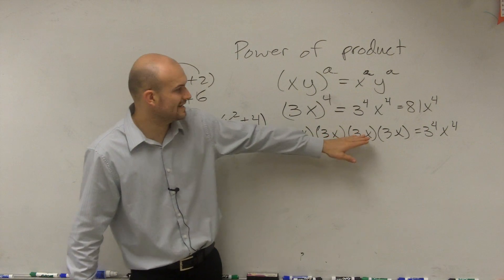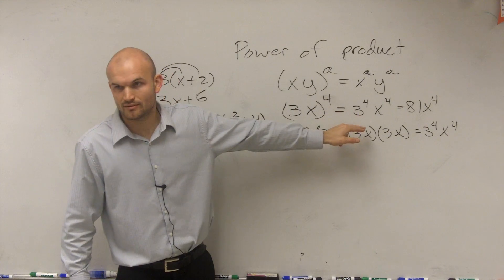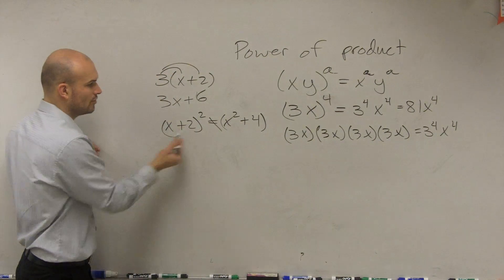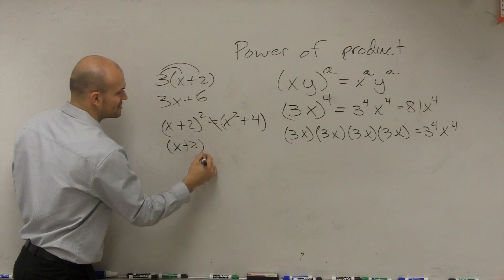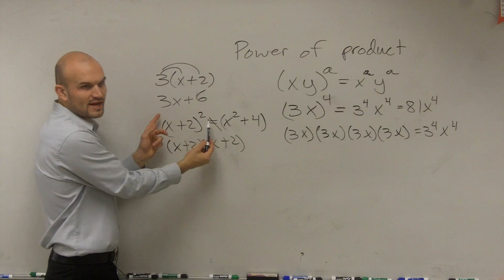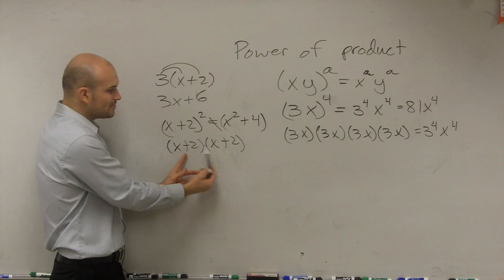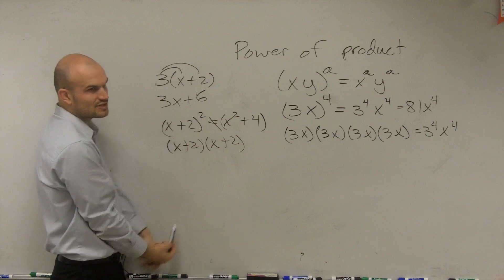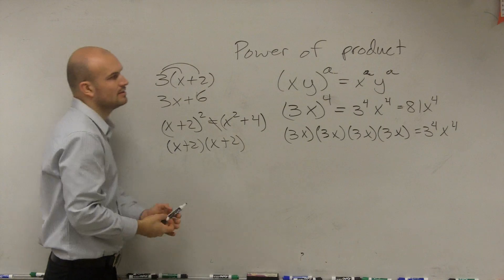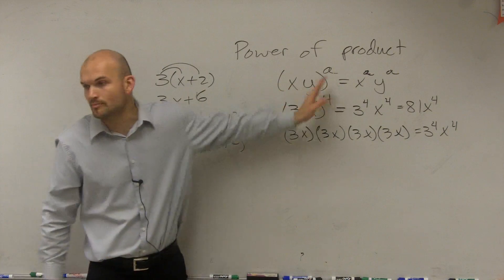Do you guys see how easy it is? It's much simpler just to distribute that exponent. But why doesn't it work for addition? Because (x + 2) squared means (x + 2) times (x + 2). Whenever you have something raised to a power, you take whatever's inside the parenthesis and multiply it by itself. (x + 2)(x + 2) does not equal x squared plus 4 — you've got to use FOIL. It's only when you have multiplication that you can distribute your power.